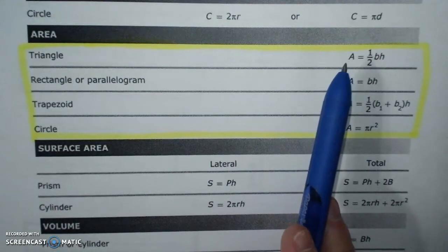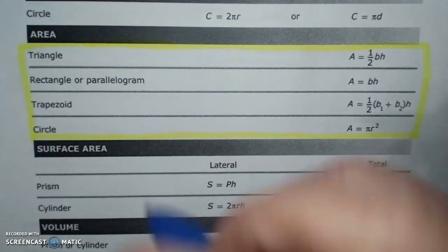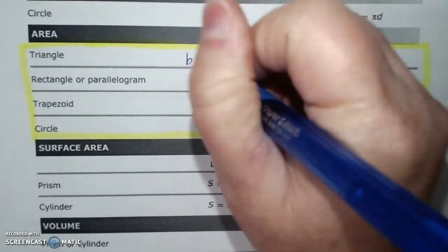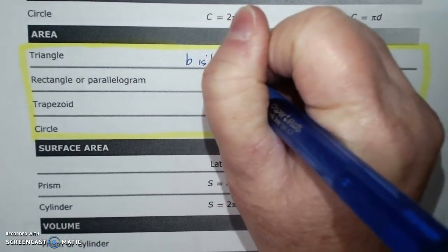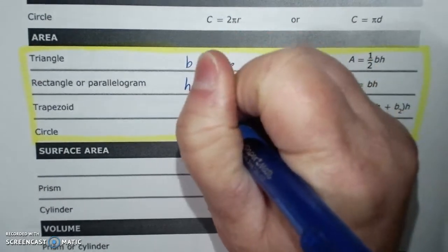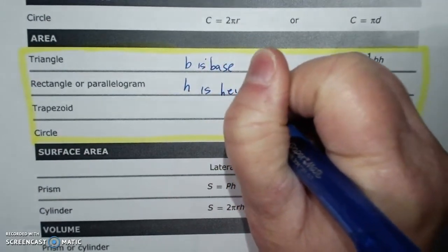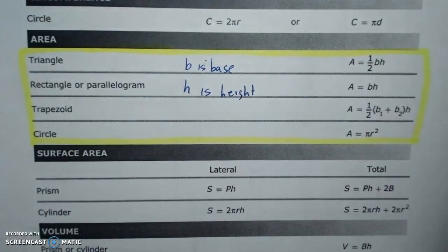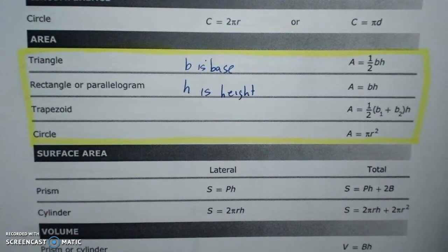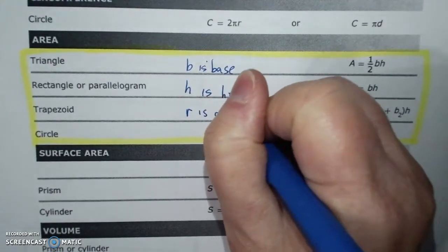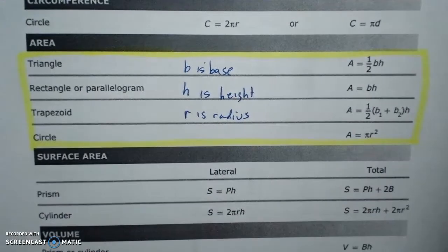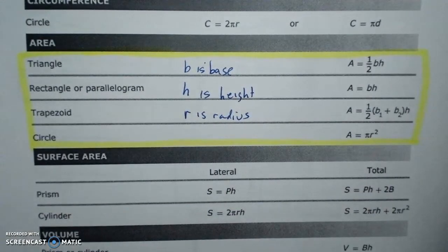The A stands for the area. B stands for base. And H is height. And one thing about height is it's always perpendicular. Okay? So that'll be a big hint. And R is radius. Some of these figures are review. Some of them are not.